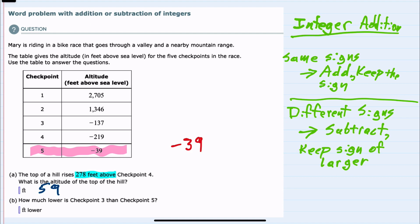If we're trying to find how much lower checkpoint 3 is we would want to subtract checkpoint 3. So we are subtracting checkpoint 3 which is negative 137.